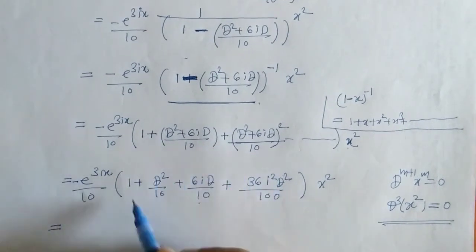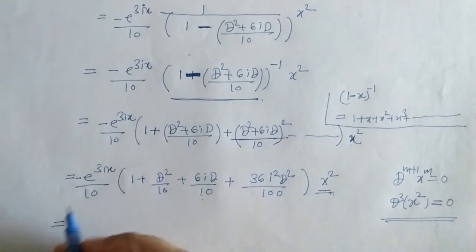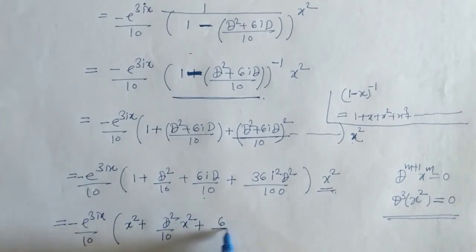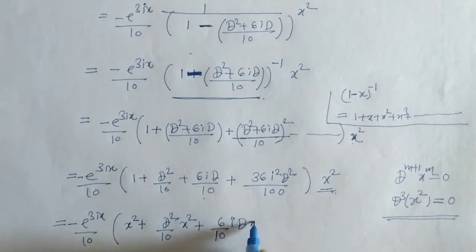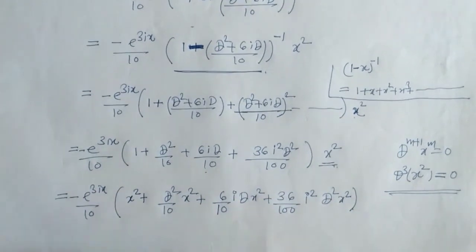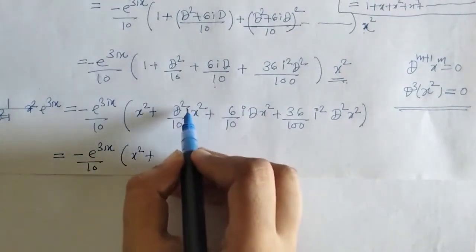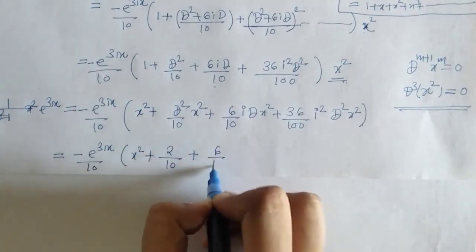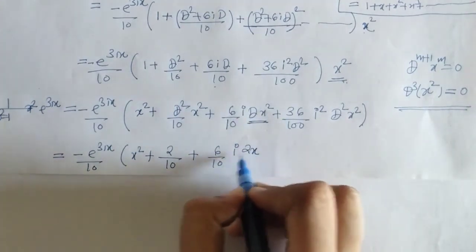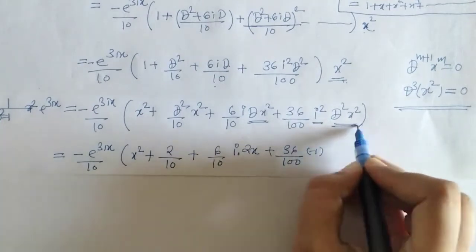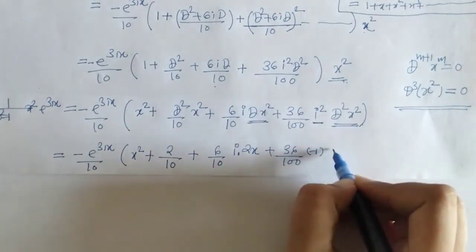We operate the derivative terms on x². First we write x², then d²/10 acting on x². The double derivative of x² is 2. Then there is a term with i² = −1 and d² acting on x², giving another 2. We simplify this entire expression.